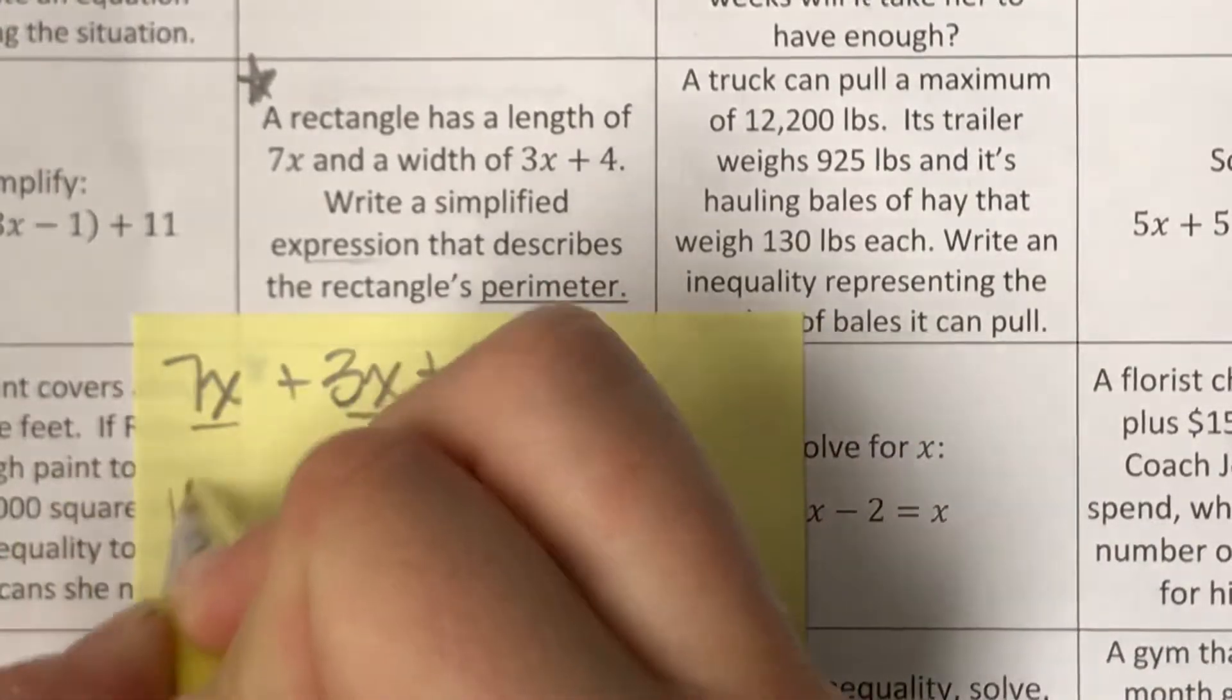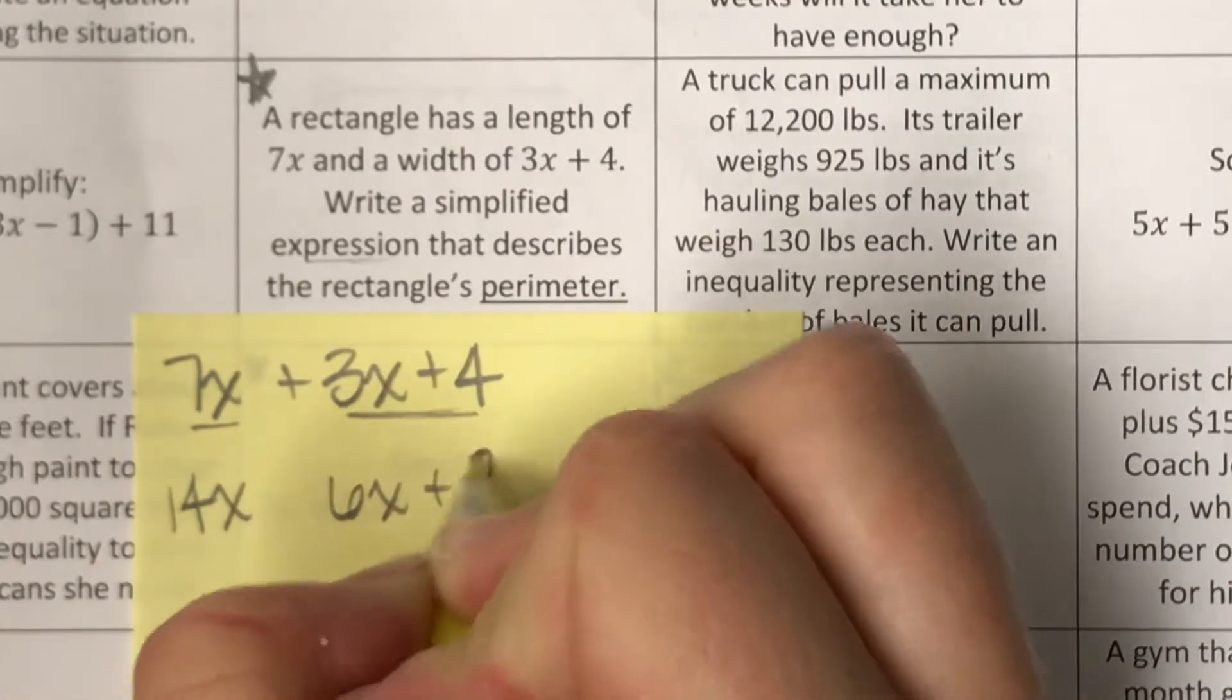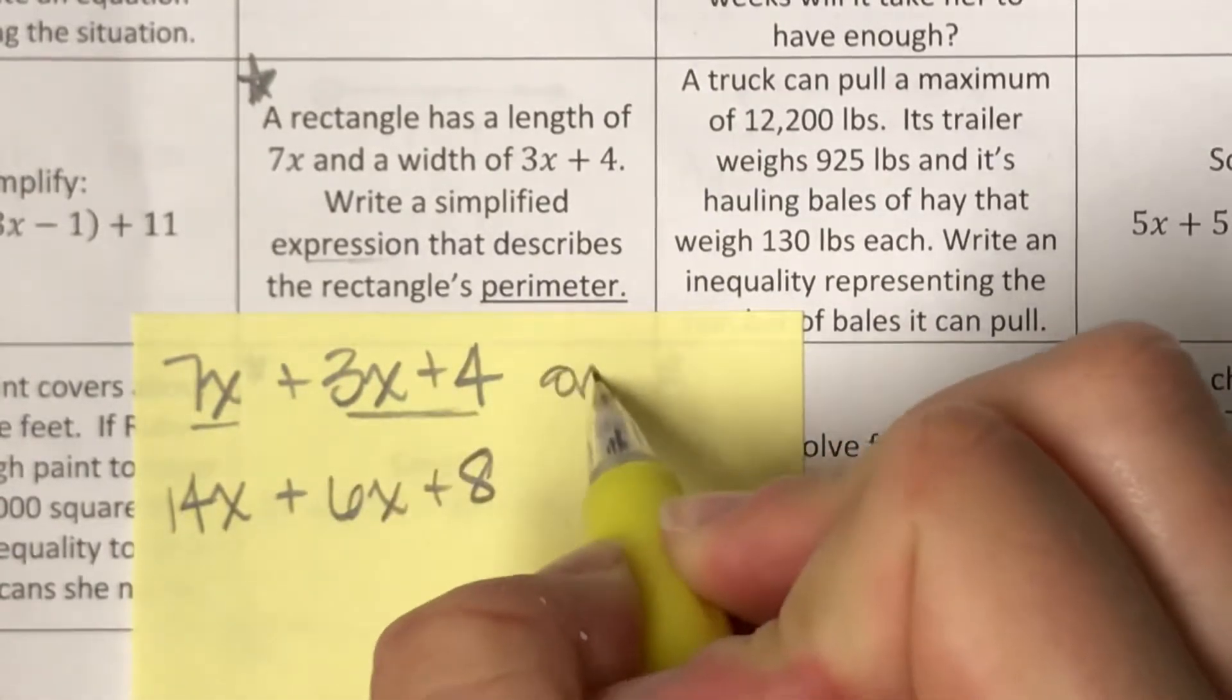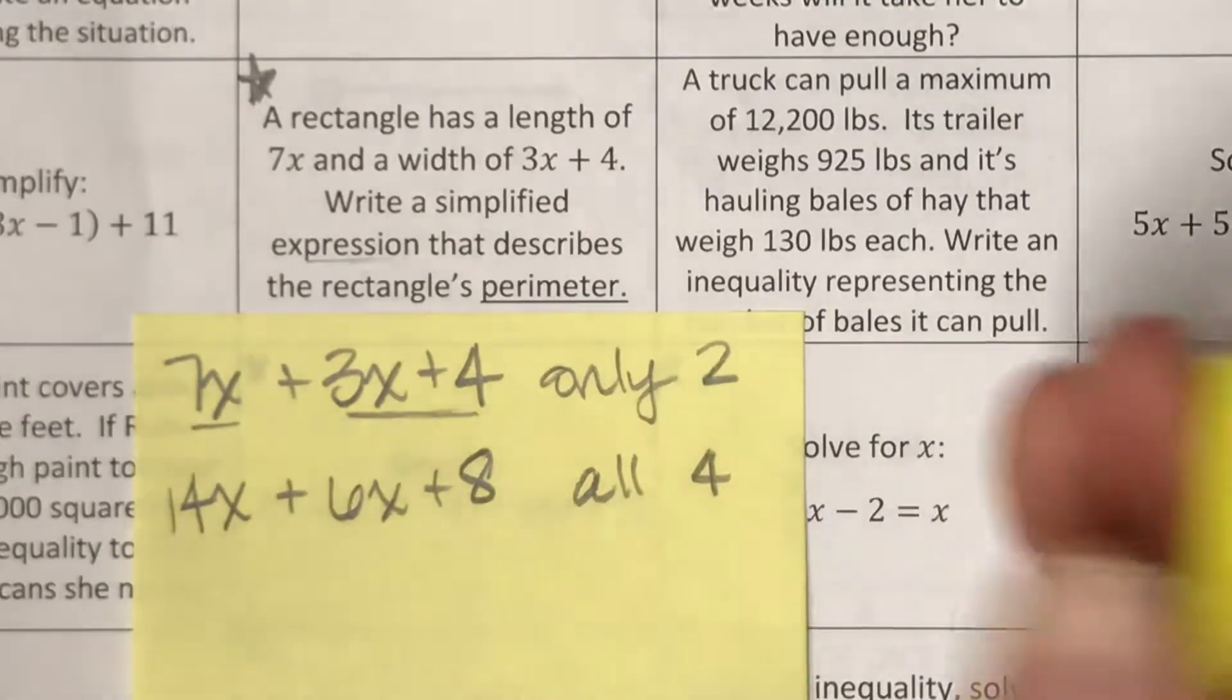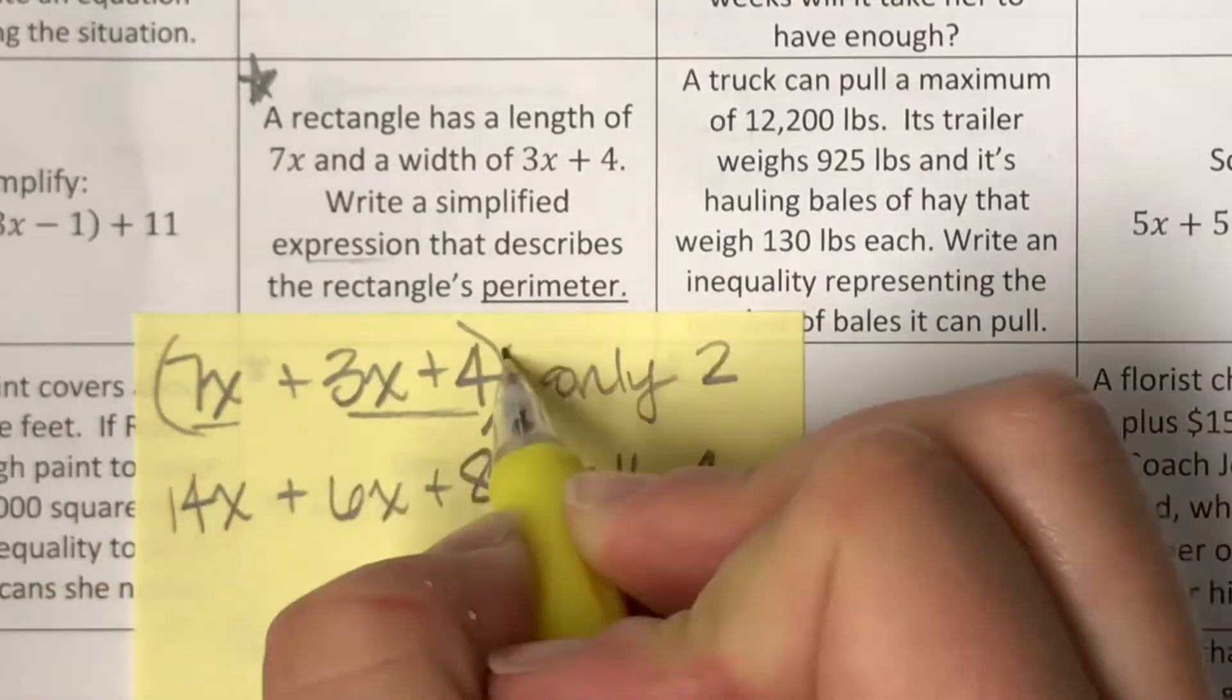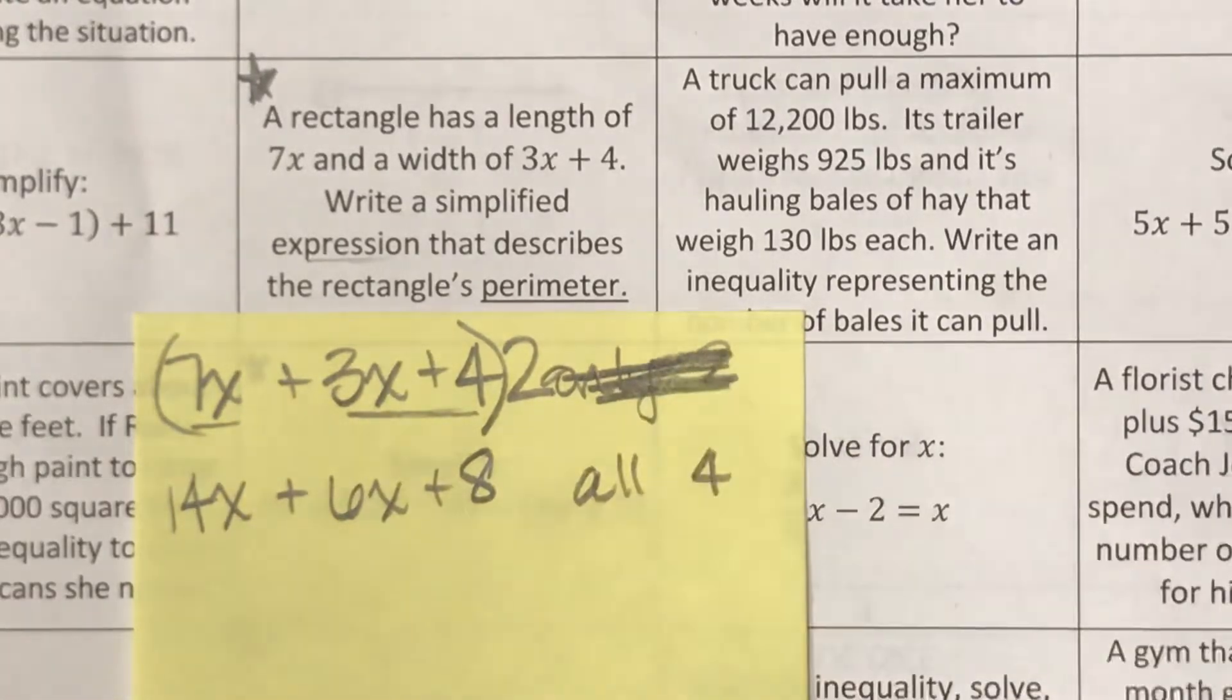What a lot of y'all have done has been kind of to go ahead and double that one and double that one. I'm totally okay with that. So this is only two of the sides. This gets all four of the sides. You could take that and just double the whole entire thing. That would take into account now we've got all four sides.